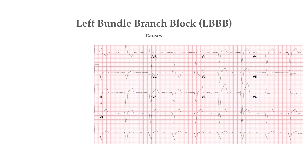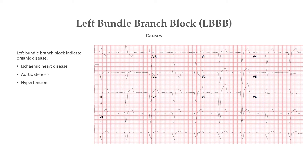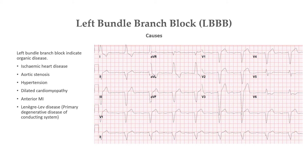Coming on to the causes of left bundle branch block. It is very unusual for left bundle branch block to exist in the absence of organic disease. Causes include ischemic heart disease, aortic stenosis, hypertension, dilated cardiomyopathy, anterior MI, Lenegre-Lev disease — which is a primary degenerative disease of the conducting system — hyperkalemia, and digoxin toxicity.